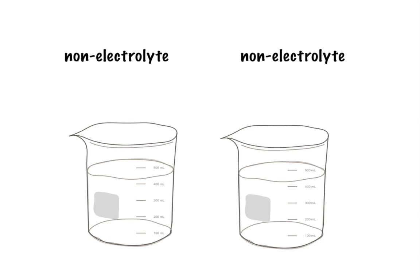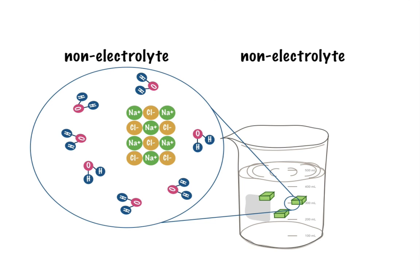So electrolyte and non-electrolyte. I have two beakers with a solution that are both non-electrolytes. What I'm going to do to one of the solutions, the one on the right, I'm going to put in salt tablets. I just made them green so that you can have a better view of them behind the white background. I have the salt tablets, and I'm going to throw them into my beaker on the right, and you're going to notice that they're going to dissolve.